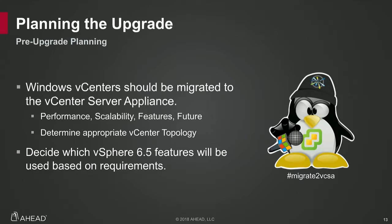Should you get off your Windows vCenter now or later? Now — you always want to move to the appliance at this point. Performance, scalability, features, and future-proofing all outperform the Windows platform. It's a simplified architecture, you won't use an external database anymore, it all runs on Photon OS, it all runs HTML5, and it's blazing fast. With 6.7 coming out today, that is the last version that's going to support both the Windows platform and the Flash client — after 6.7, the next version won't support either.